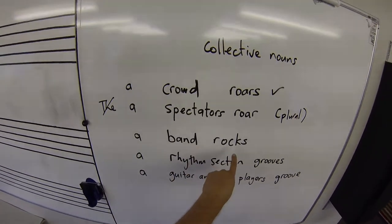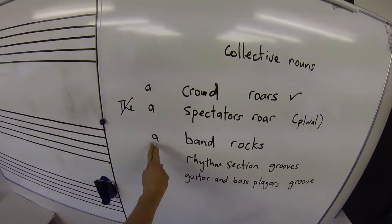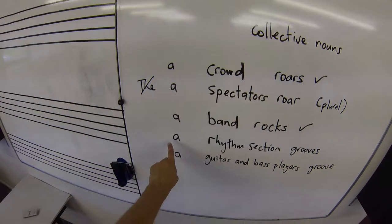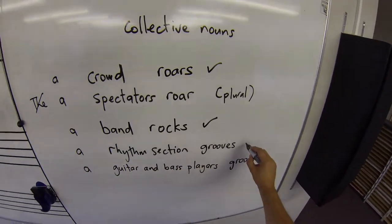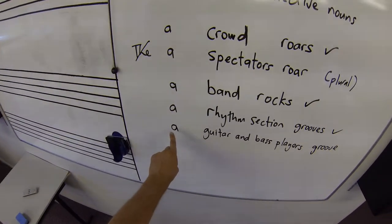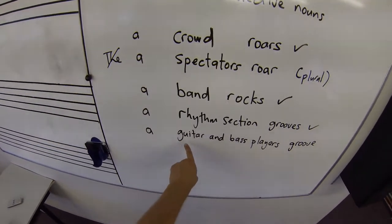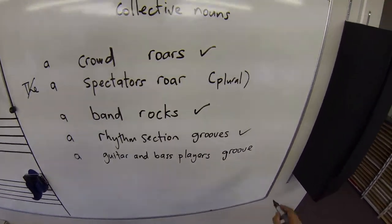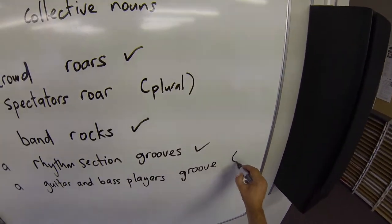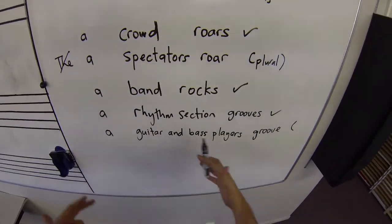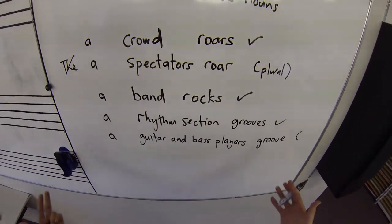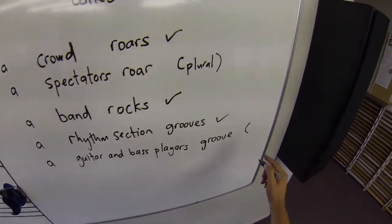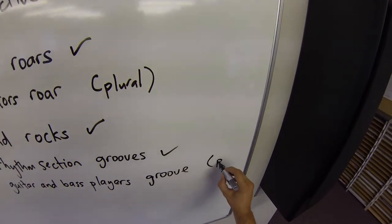A band rocks — yes, you can say a band, so that's fine. A rhythm section — that's fine. But you can't say a guitar and bass players — plural. That doesn't work. So you know that this noun, or group of words that has become a noun, guitar and bass players, is plural.